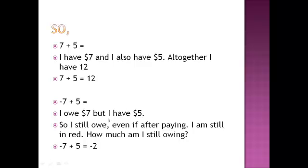So seven plus five — I have seven dollars and I also have five dollars. Altogether, am I having or am I owing? I am having, so our answer will be a positive twelve. Negative seven plus five means I owe seven dollars but I do have five dollars.